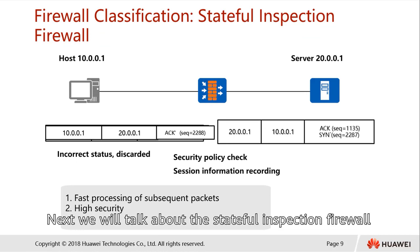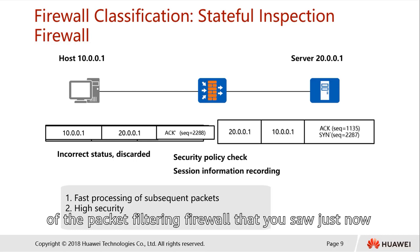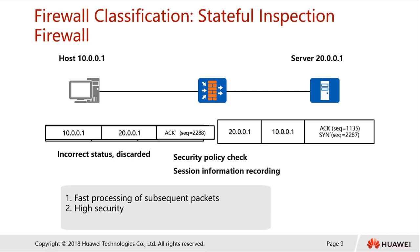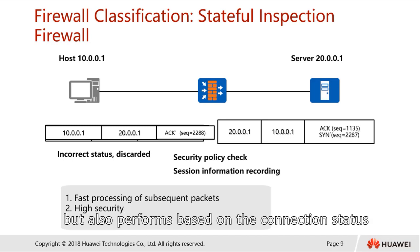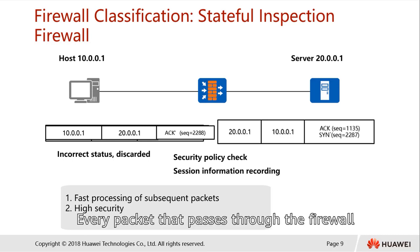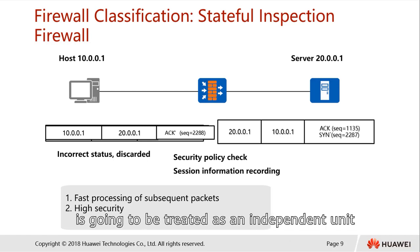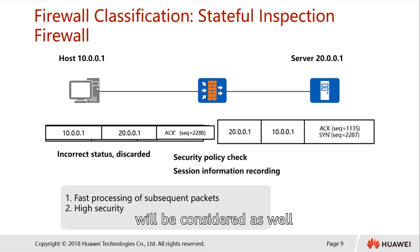Next, we have the stateful inspection firewall. The stateful inspection firewall is an extension of the packet filtering firewall. The firewall not only performs packet filtering but also considers the connection status. Each packet that passes through the firewall is treated as an independent unit, and any historical association of packets will be considered as well.